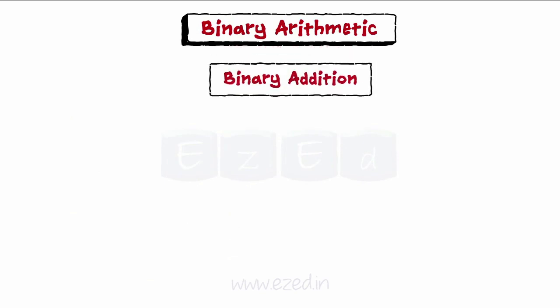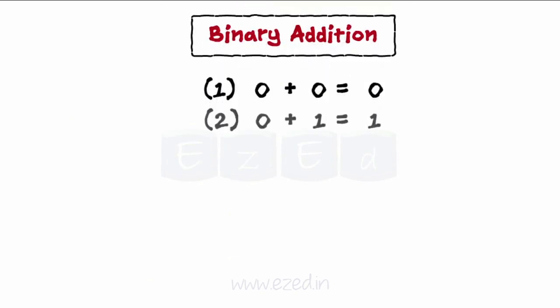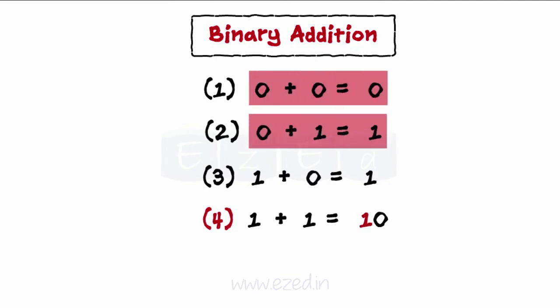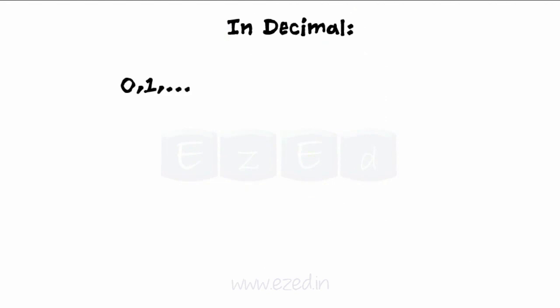Moving on to binary arithmetic, starting with binary addition. Adding two binary numbers together is easy, keeping in mind the following four addition rules. Note: in the fourth point, it was necessary to carry the one. After the first two binary counting numbers — zero and one — all of the binary digits are used up. In the decimal system, we used up all the digits after the tenth counting number, nine.